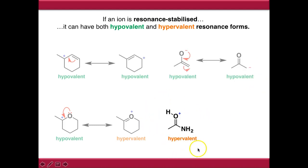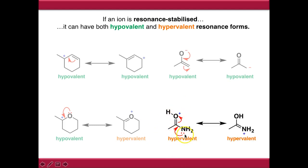And here we have a protonated amide, which is hypervalent - oxygen is making too many bonds. If we draw the resonance form using the lone pair off nitrogen to push in, then we end up with a hypovalent resonance form. So it's possible to have mixtures of hypovalency and hypervalency depending on what you've got in your molecule.